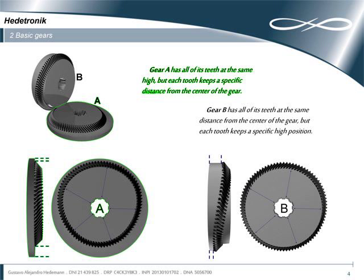In the Headatronic system, Gear A has all of its teeth at the same height, but each tooth keeps a specific distance from the center of the gear. Gear B has all of its teeth at the same distance from the center of the gear, but each tooth keeps a specific height position.